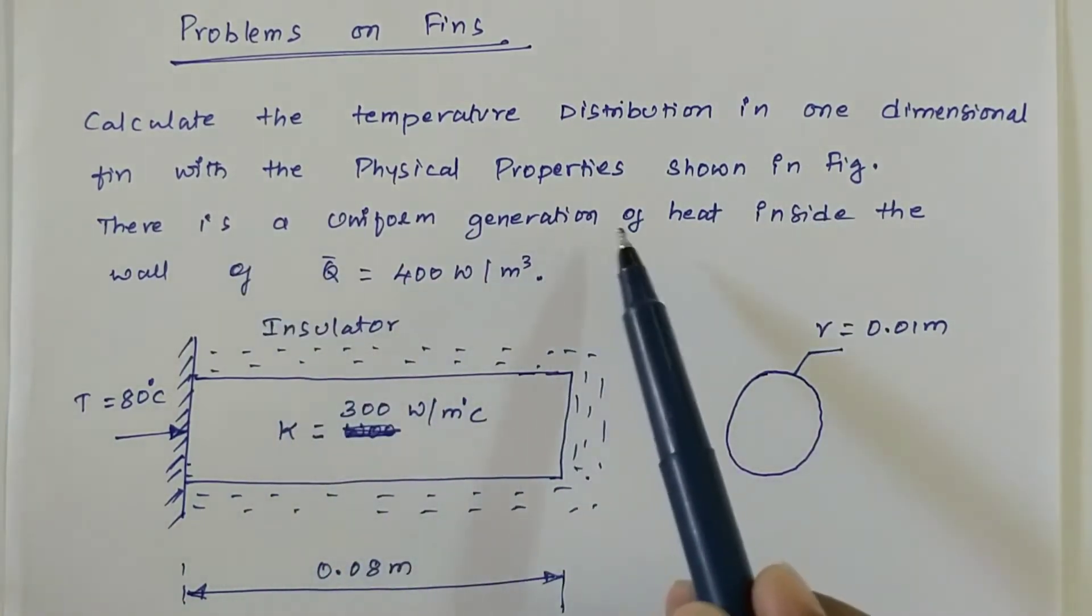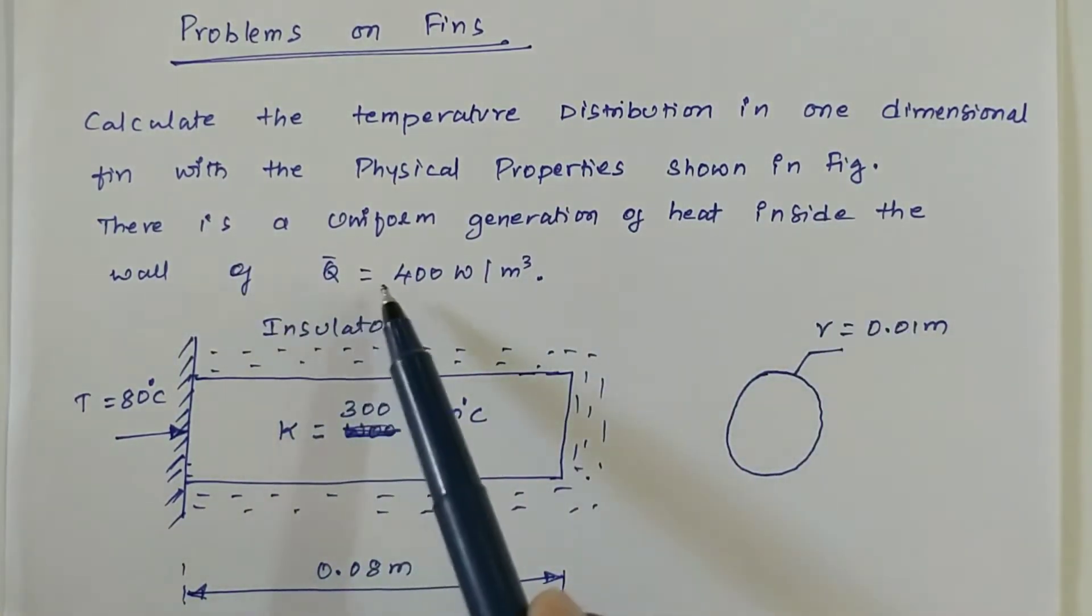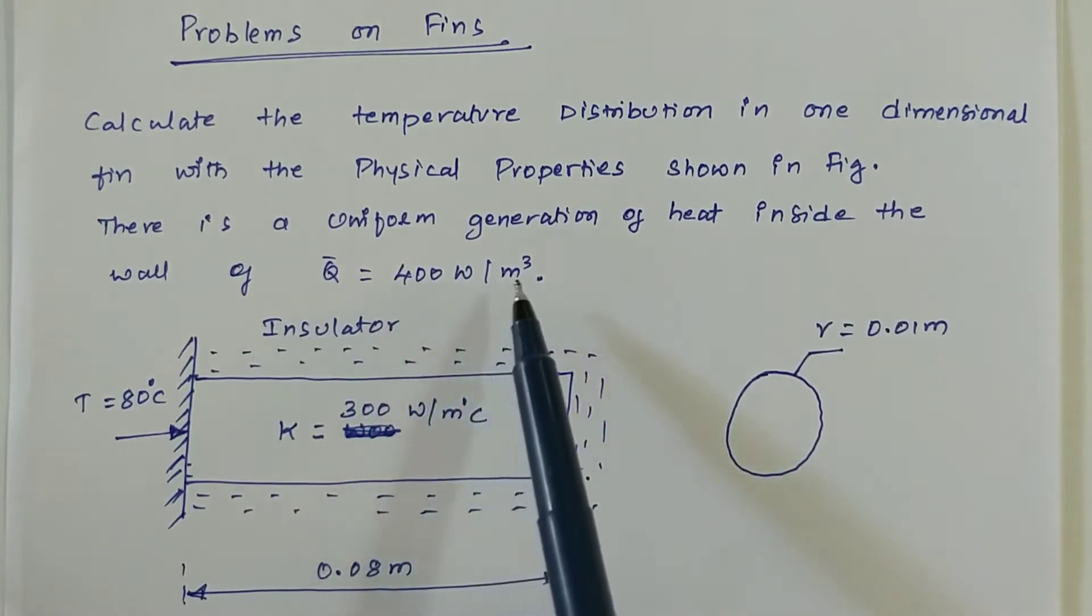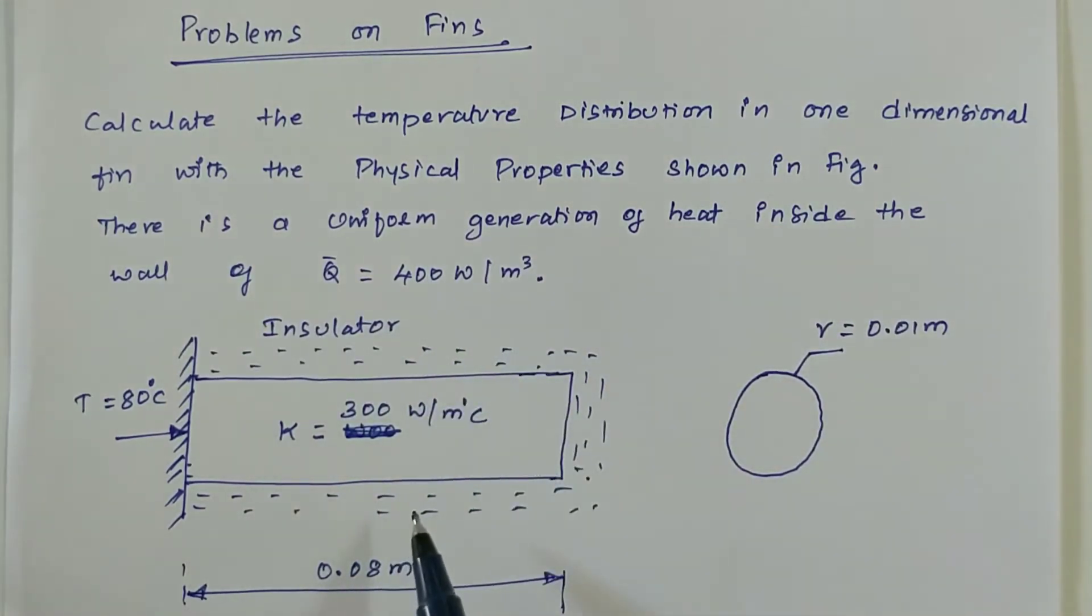There is a uniform generation of heat inside the wall of Q bar equals 400 Watt per meter cube. This is a given diagram with thermal conductivity T 300 Watt per meter degree centigrade and it is insulated as well, and it has a temperature at this end of 80 degree centigrade.